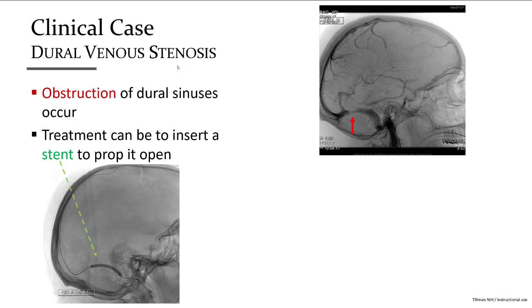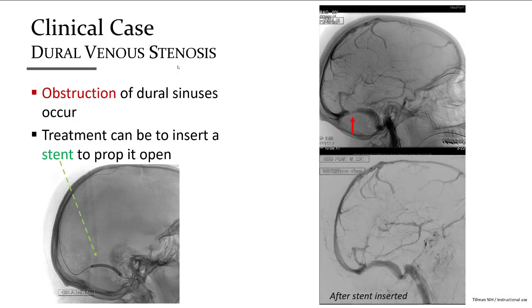To reinstate this flow, a stent is placed to keep it propped open. We can see that blood flow has been restored in this postoperative venogram.